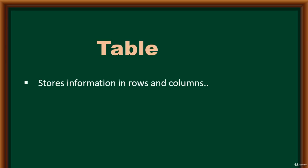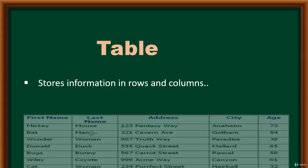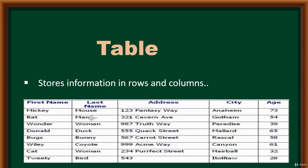A table basically stores information in rows and columns, just like in an Excel spreadsheet. The rows are horizontal and represent unique records in a table. The columns or fields are vertical — age, city, address, last name, and first name can be referred to as columns or fields. The rows are referred to as records, and each record should be unique in a table.